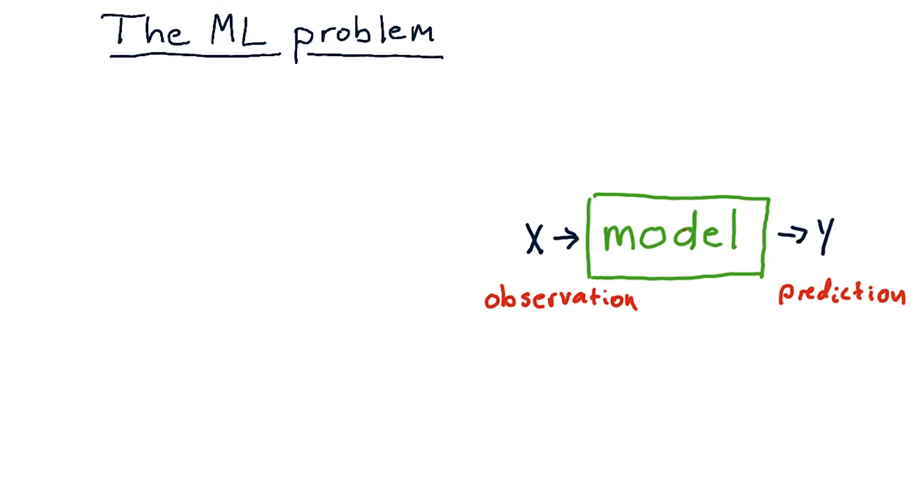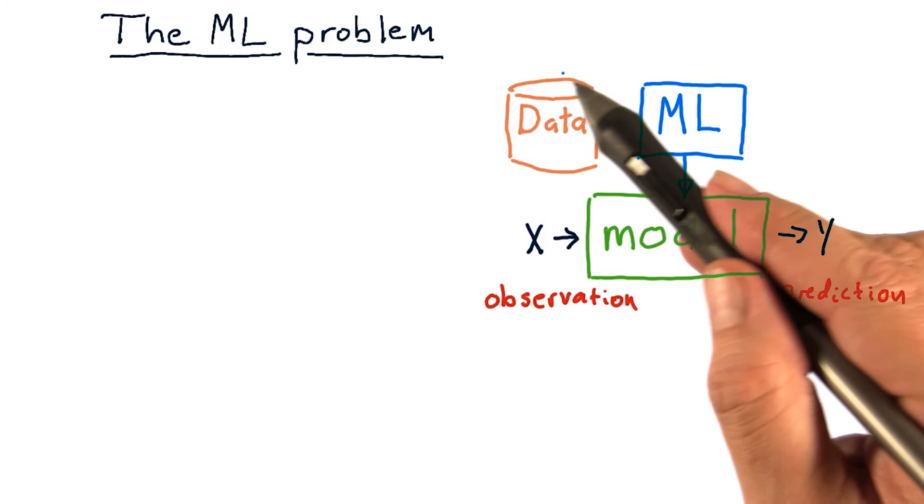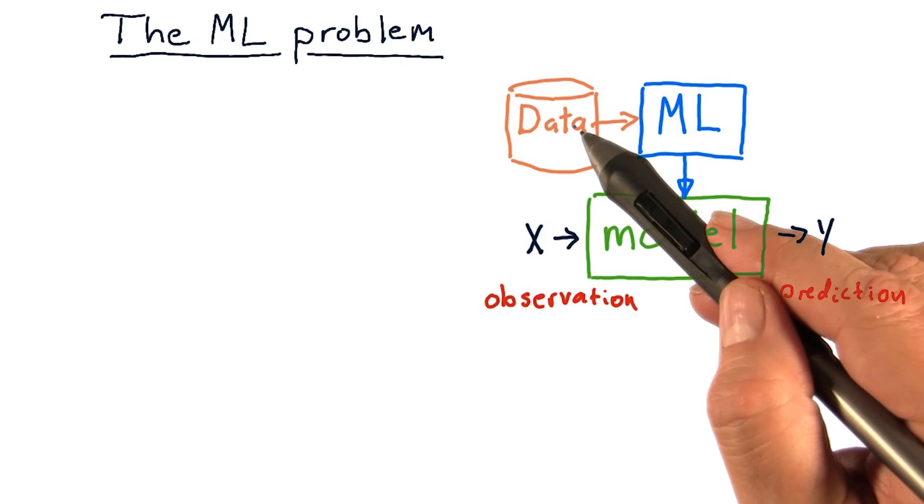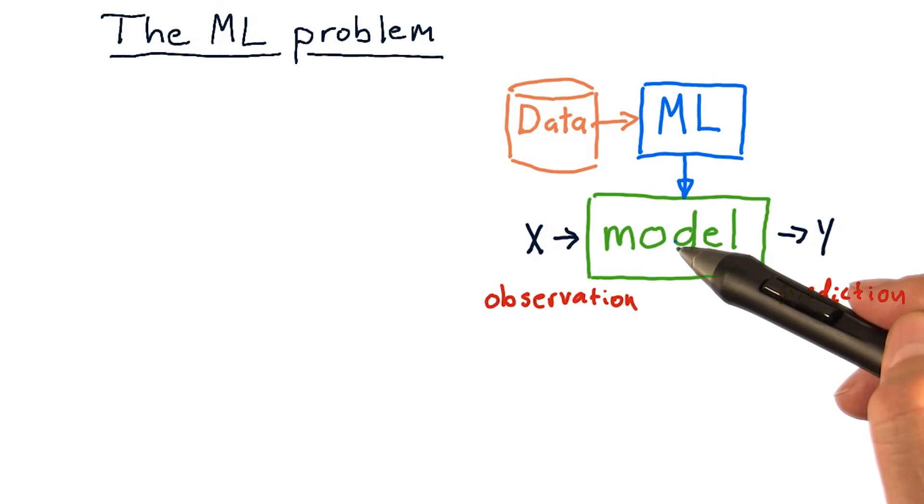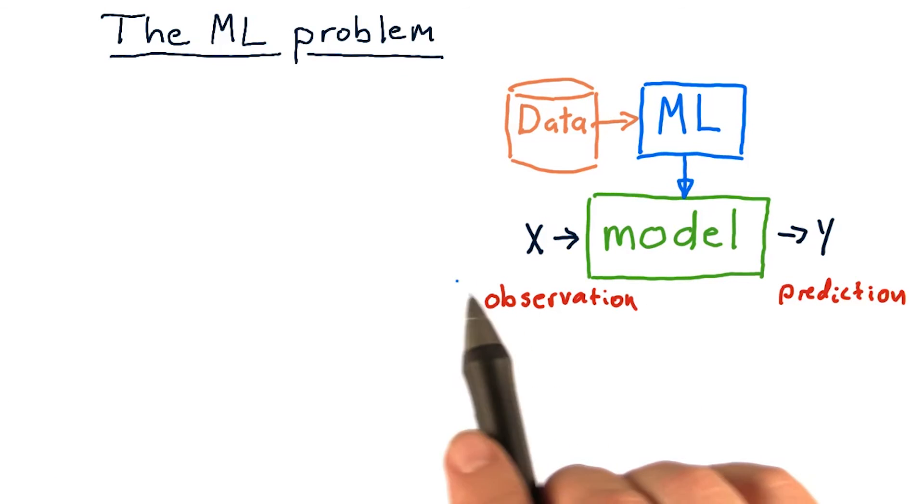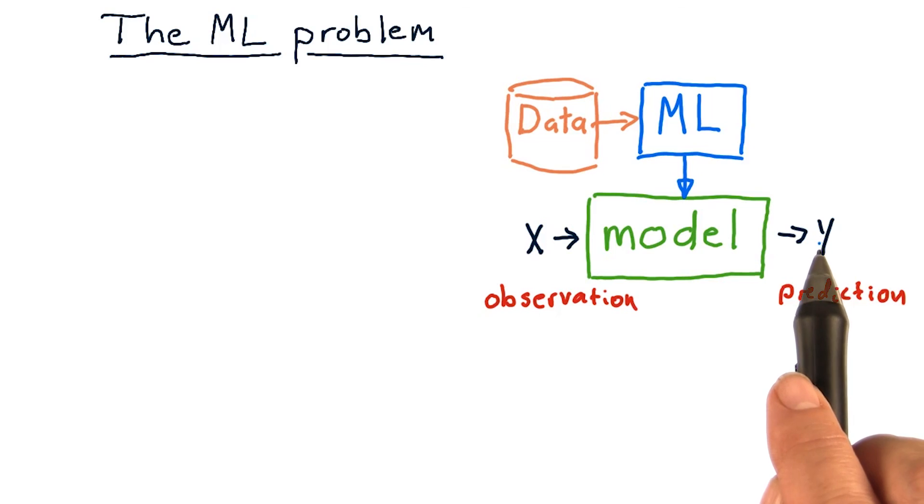But of course, with machine learning, we're trying to use data. So the machine learning process is to take historical data, run it through a machine learning algorithm of some sort to generate the model. Then, at run time, or when we need to use the model, we push x's in it and y's come out.